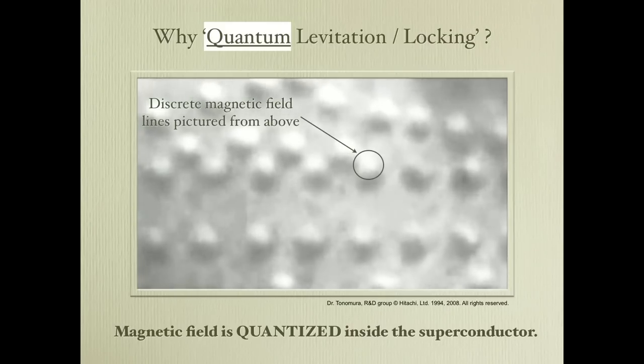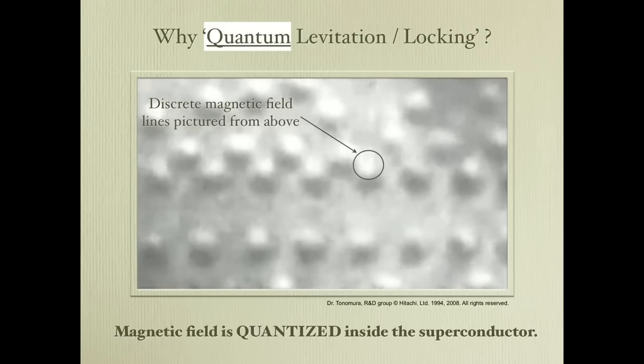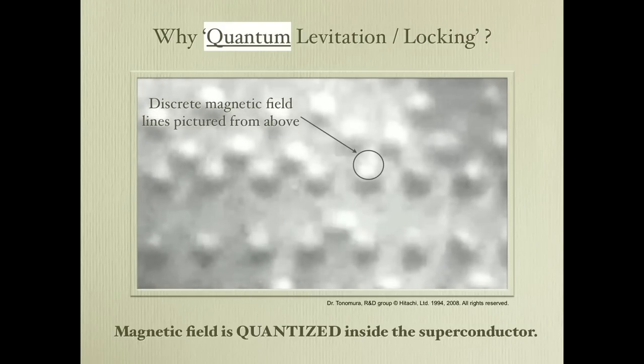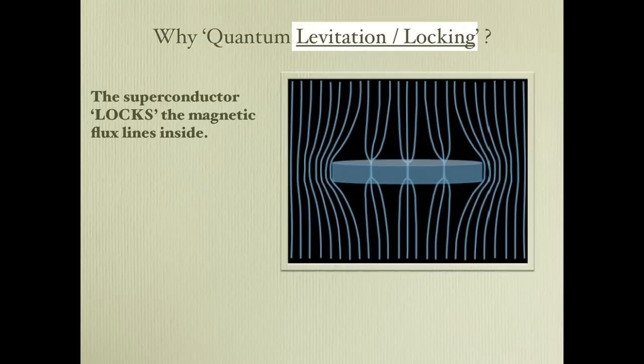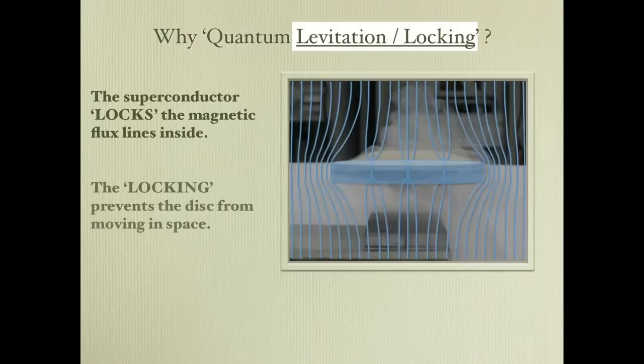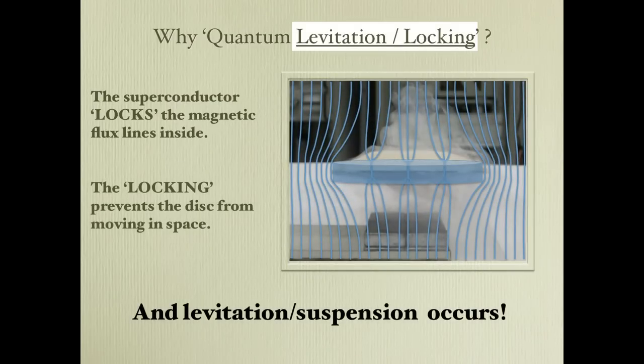This is why we call this effect quantum levitation and quantum locking. When we put a superconductor inside a magnetic field, strands of magnetic field are left inside. The superconductor doesn't like them moving around, because their movement dissipates energy and breaks the superconducting state. So it locks these strands — called fluxons — in place. By doing that, it locks itself in place, because any movement of the superconductor would change the fluxons' configuration. This is quantum locking.